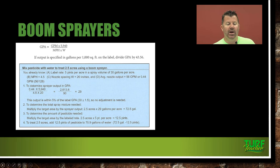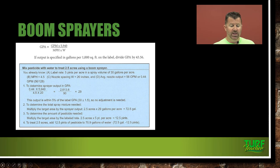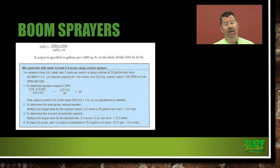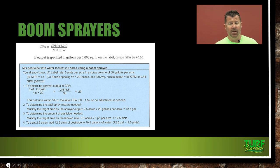Boom sprayer full example: mix pesticide with water to treat 2.5 acres. Label rate is 5 pints per acre at 30 gallons per acre spray volume. Total spray mixture: 2.5 acres × 29 GPA = 72.5 gallons. Pesticide needed: 2.5 acres × 5 pints/acre = 12.5 pints. Add 12.5 pints of pesticide to 70.9 gallons of water (72.5 minus the equivalent of 12.5 pints). Walking with a backpack or gun sprayer involves less math than boom sprayer calibration with multiple nozzle types.